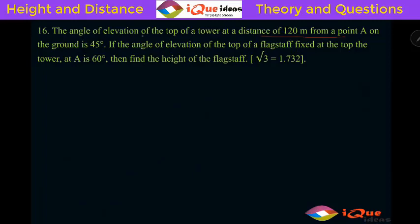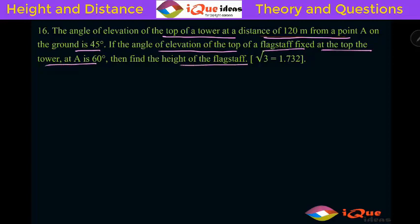This question says the angle of elevation of the top of a tower at a distance of 120 meters from a point A on the ground is 45 degrees. If the angle of elevation of the top of a flagstaff fixed at the top of the tower at A is 60 degrees, find the height of the flagstaff.